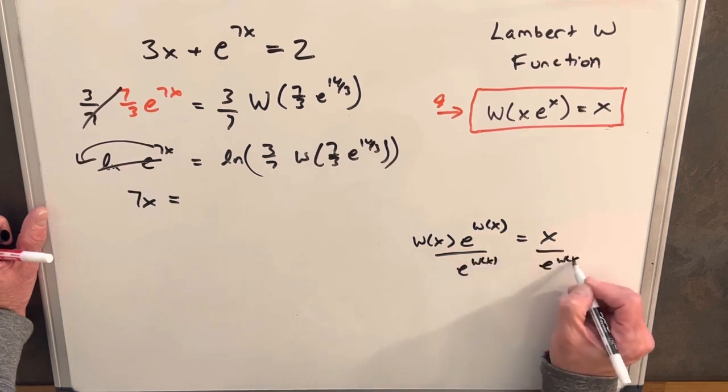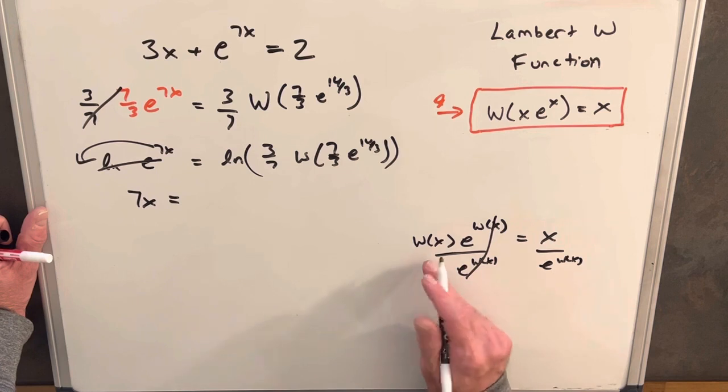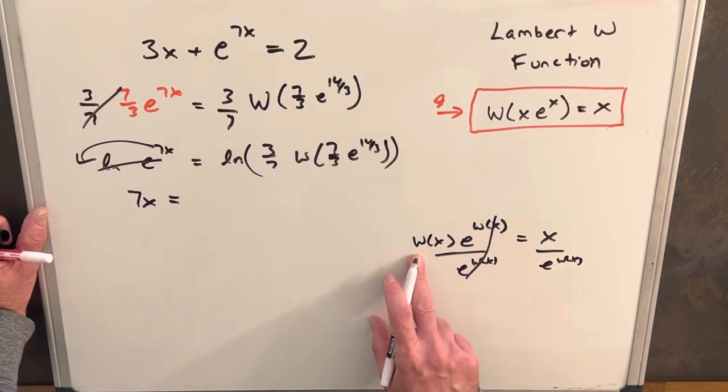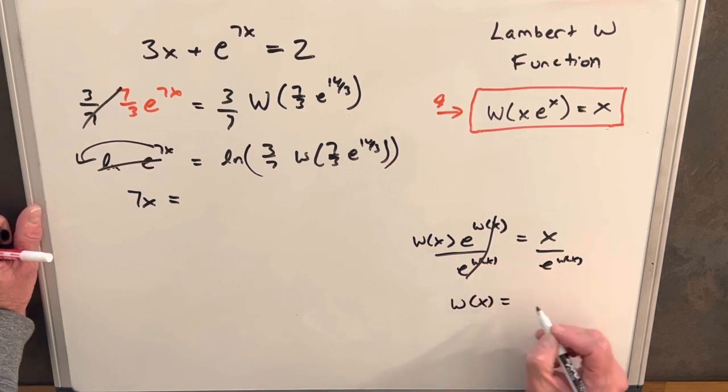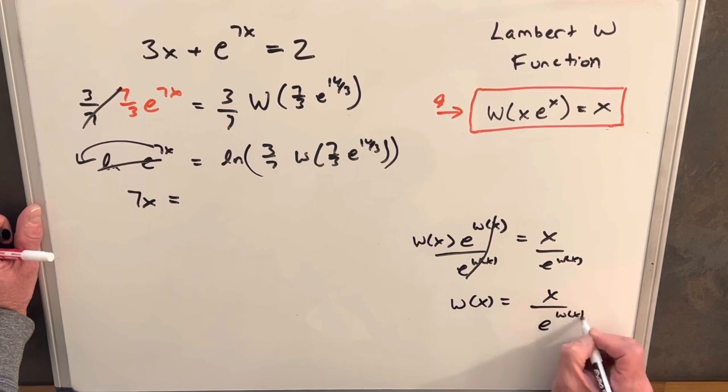And so we have a formula for putting our Lambert W in a different form as well. So then we can just have this slightly different format. W(x) equals x over e to the W of x.